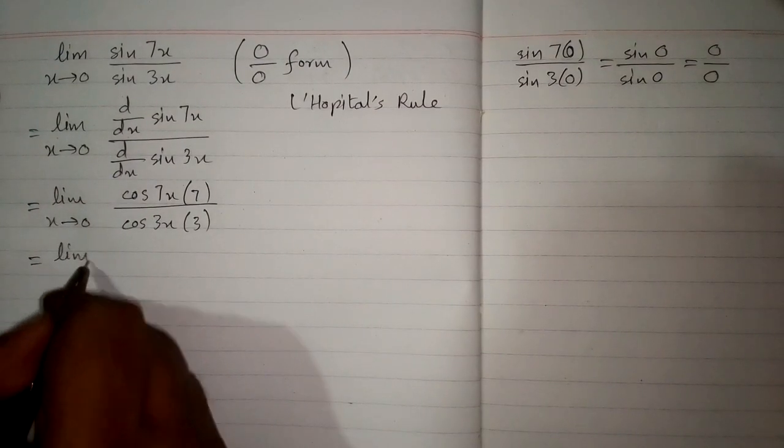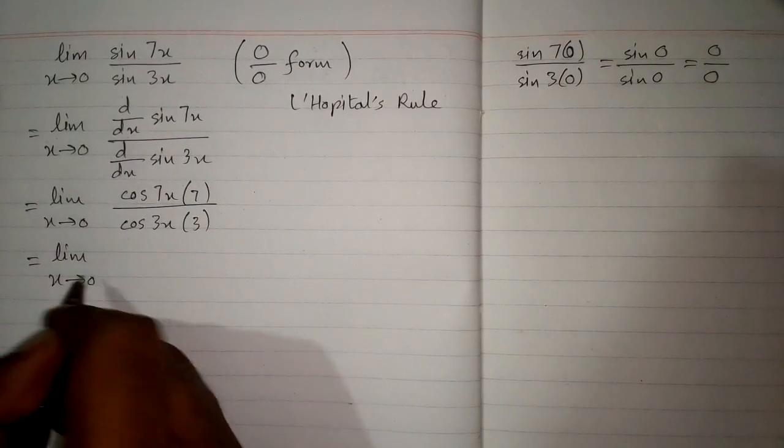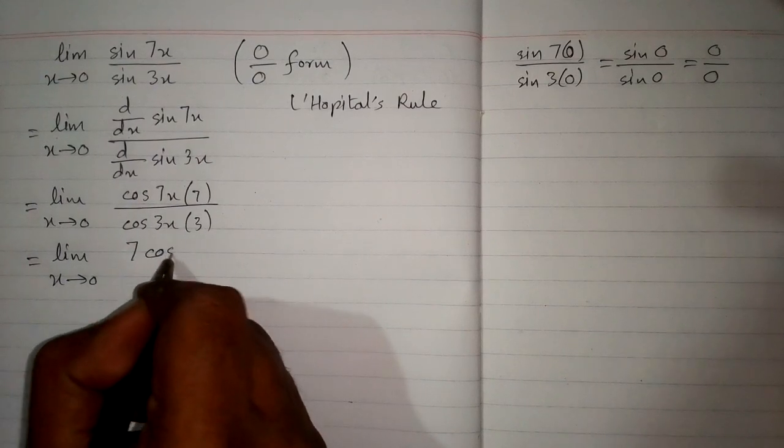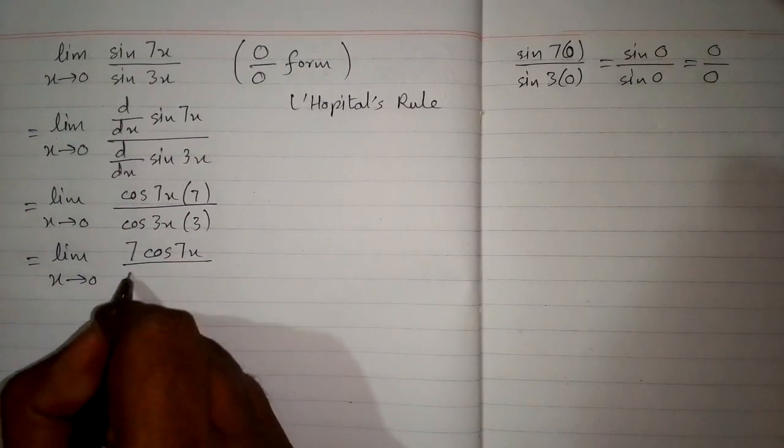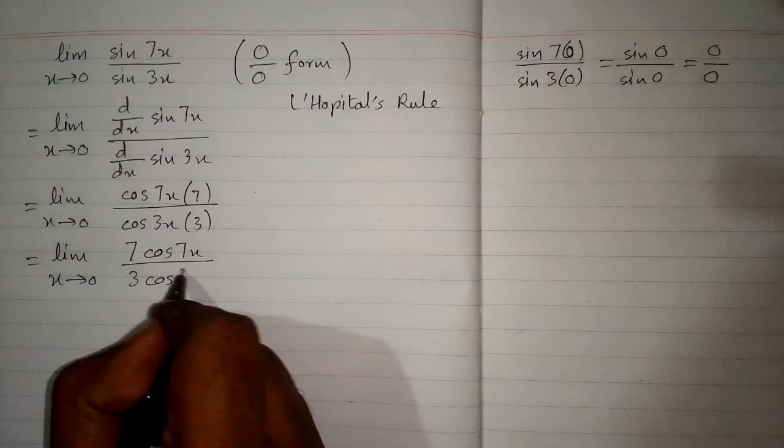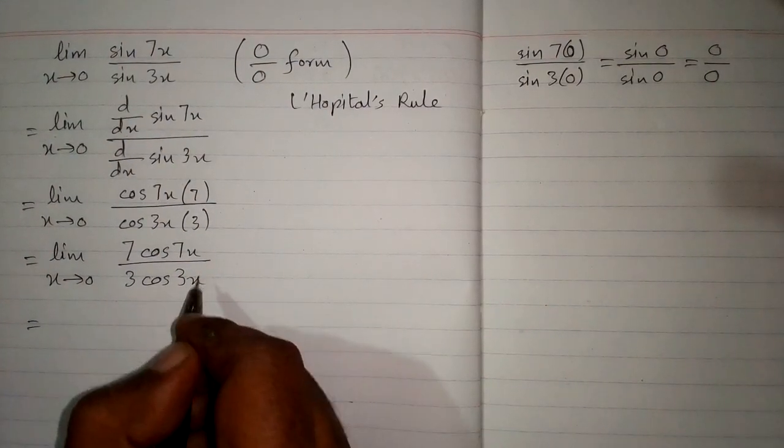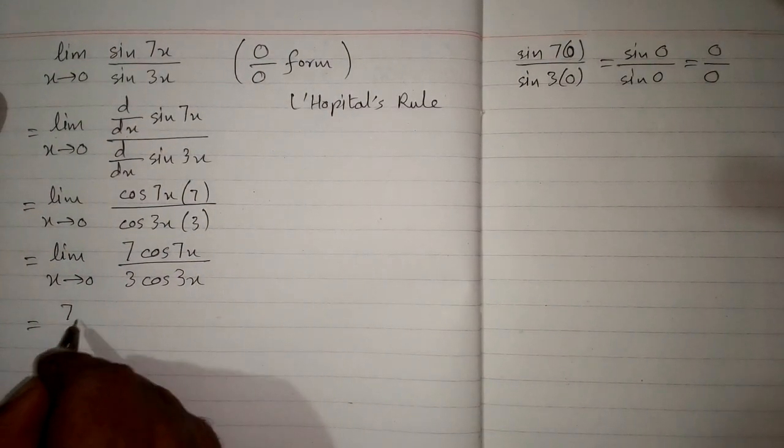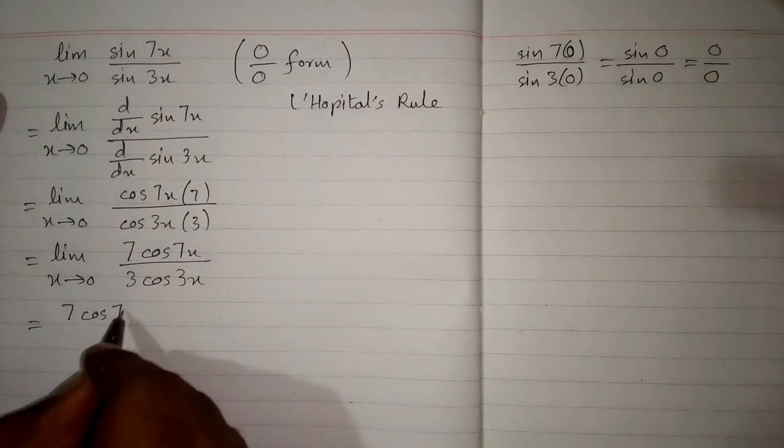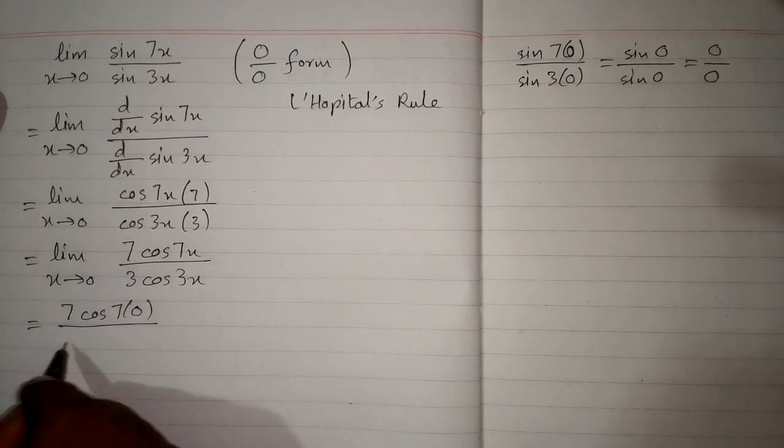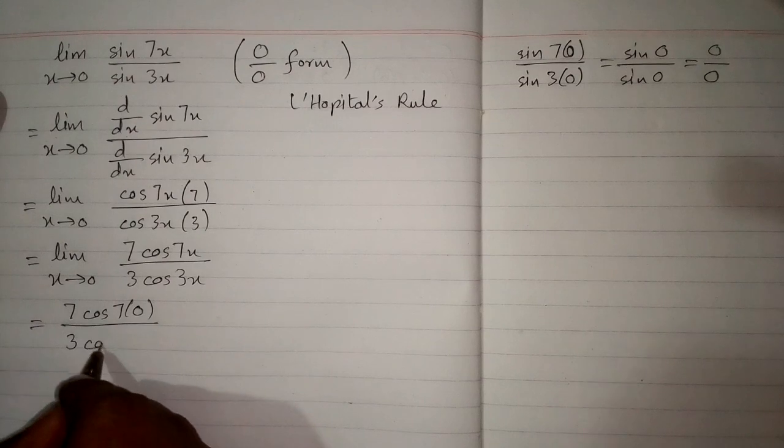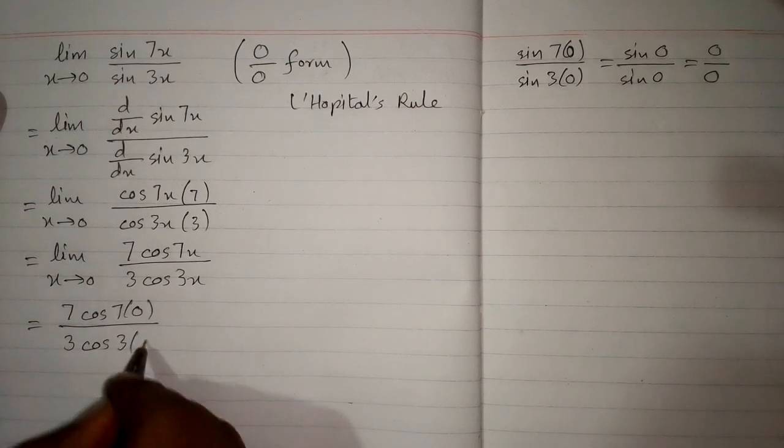So we have limit x tends to 0, 7 times cosine of 7x upon 3 times cosine of 3x. Now we can apply the limit in this function. So we have 7 times cosine of 7 times 0 upon 3 times cosine of 3 times 0.